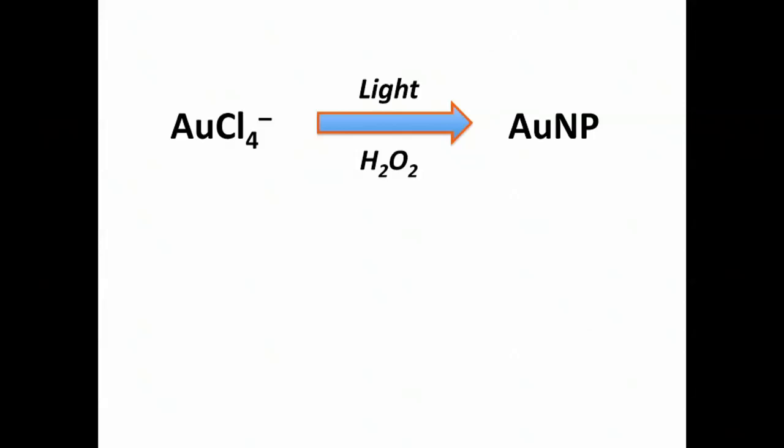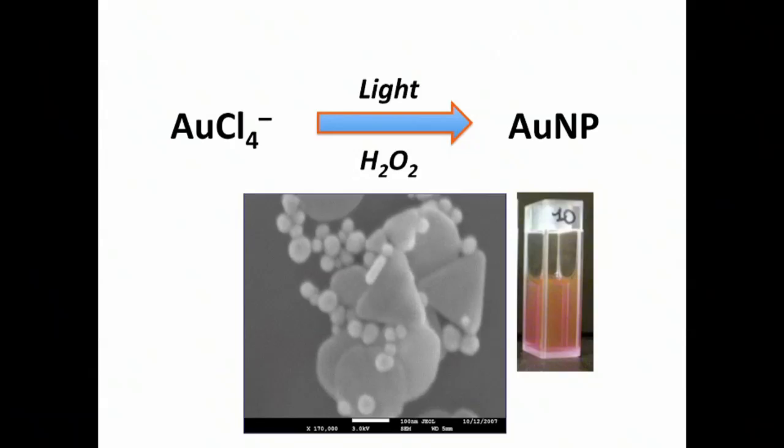One of our favorite methods to make very clean gold nanoparticles uses hydrogen peroxide as a reducing agent. We can simplify the mechanistic scheme into simply saying that the gold precursor with light and hydrogen peroxide gives gold nanoparticles. These particles, however, have the problem of being polymorph and polydispersed, many shapes, many sizes, some large enough to start looking like gold as we see in the cuvette to the right.